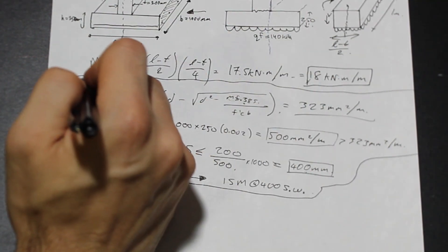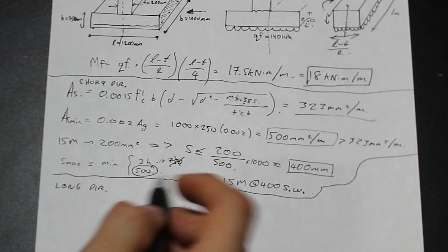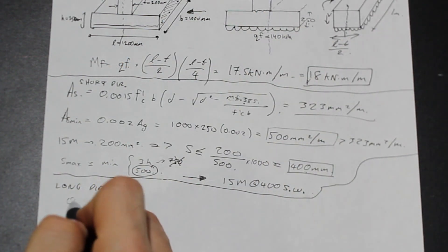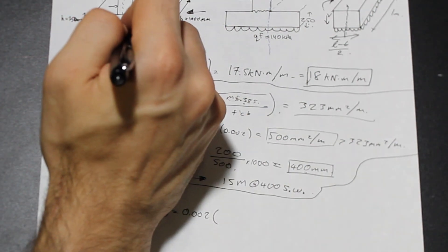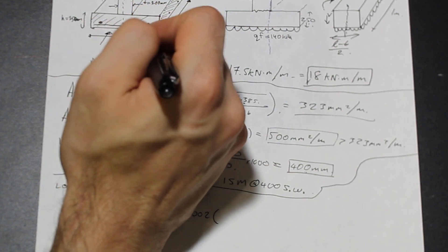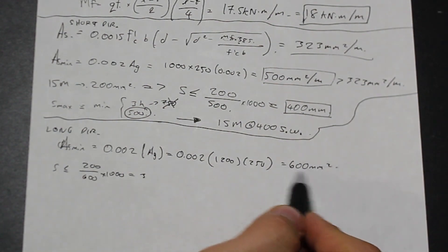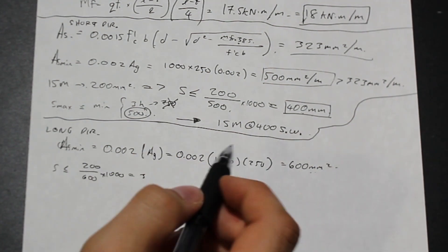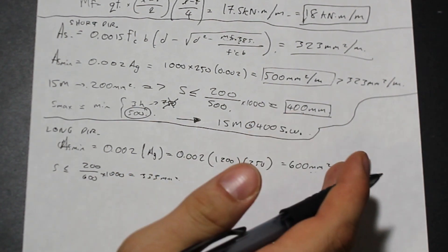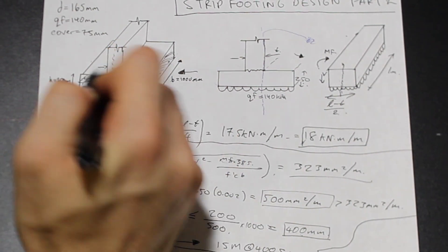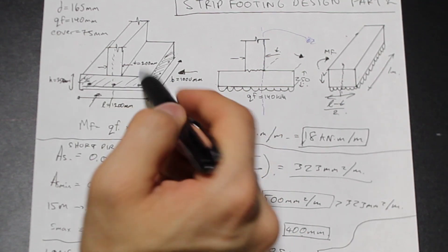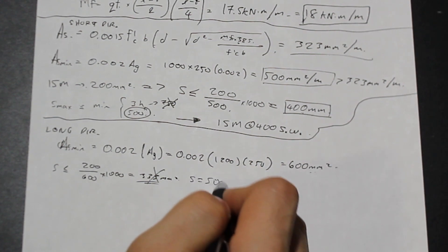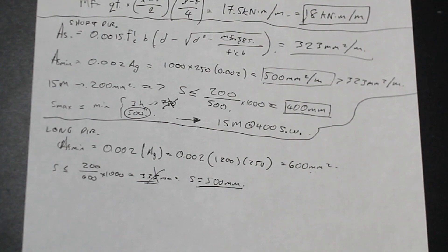In the longitudinal (long) direction, we use minimum steel. AS min is again 0.2%, but now the gross area is 250 × 1,200 = 300,000 mm², giving AS min = 600 mm². Spacing would be 200/600 × 1,000 = 333mm. However, with about 100mm side cover on each end, we're left with roughly 1,000mm between covers — placing bars at 500mm spacing, which equals the maximum spacing allowed, is practical. So we'll provide 3 – 15M bars in the long direction.